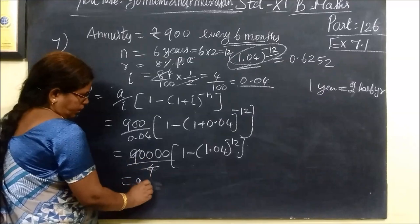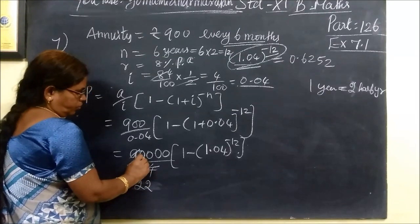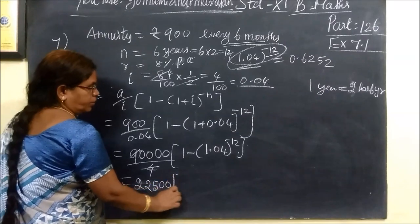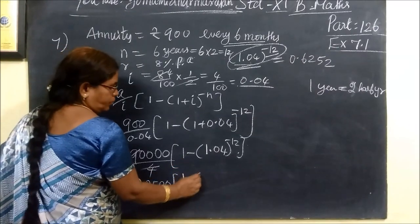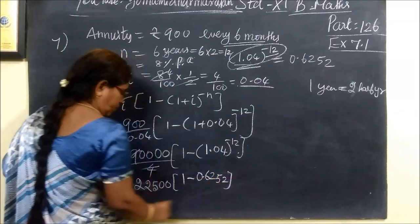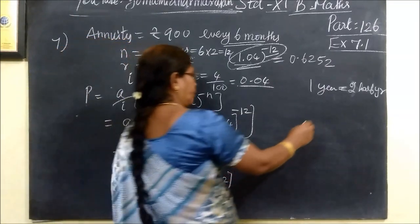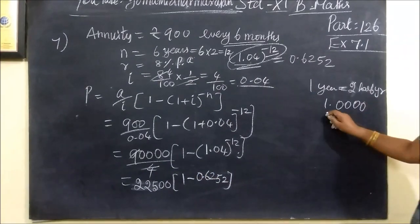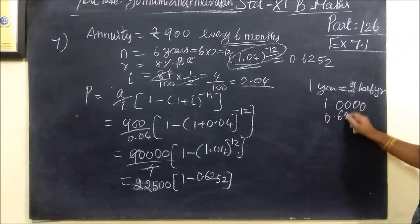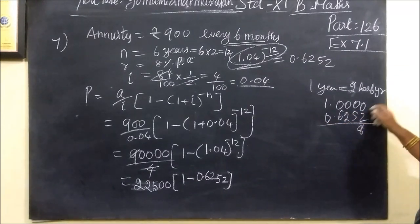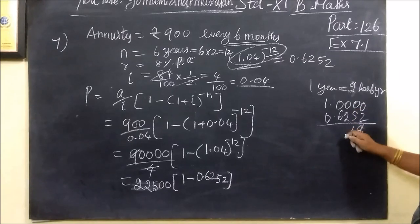This is equal to 1 minus 0.625. It is given in the question itself. 1.04 to the minus 12 equals 0.6252. That equals 8. Then 9 minus 7 is 3, 7, then 3.